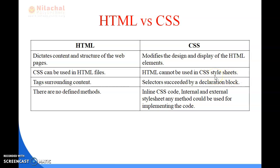We have to use a separate file for CSS, or include it within HTML files. HTML cannot be used inside CSS files. In HTML, tags surround content, but in CSS, selectors are succeeded by a declaration block. In HTML, methods are already predefined. In CSS, inline CSS, internal, and external style sheets are available methods that can be used for implementing the code.